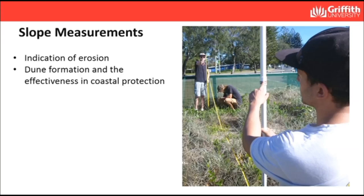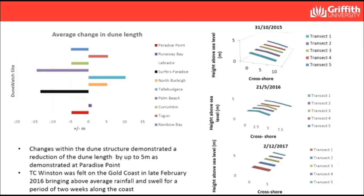We do slope measurements, which are an indicator for erosion. We can look at sensor data collected over the last 20 years and examine beach erosion. This method is very easy to do and quite simple for most of our participants to take part in, and it's quite effective in furthering policy for coastal protection on the Gold Coast.